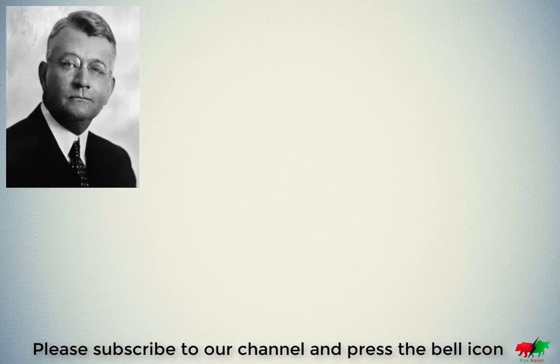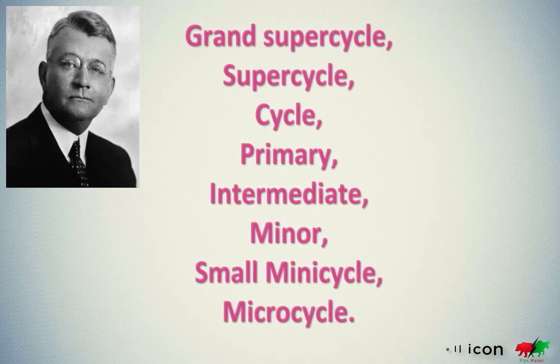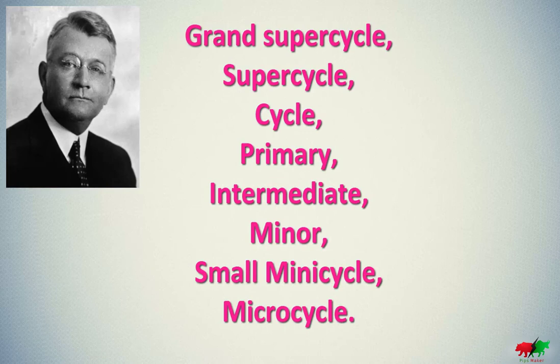Elliott established the names for the following degrees: Grand Supercycle, Supercycle, Cycle, Primary, Intermediate, Minor, Small Minicycle, and Microcycle. Thanks to introducing such a naming system, Elliott was able to recognize precisely the place of a certain wave in the overall market perspective.